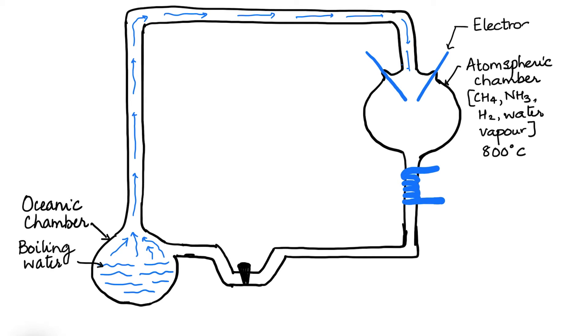He also inserted electrodes for electric discharge that signified lightning. A condenser was placed below the atmospheric chamber to cool the water droplets coming down from it.